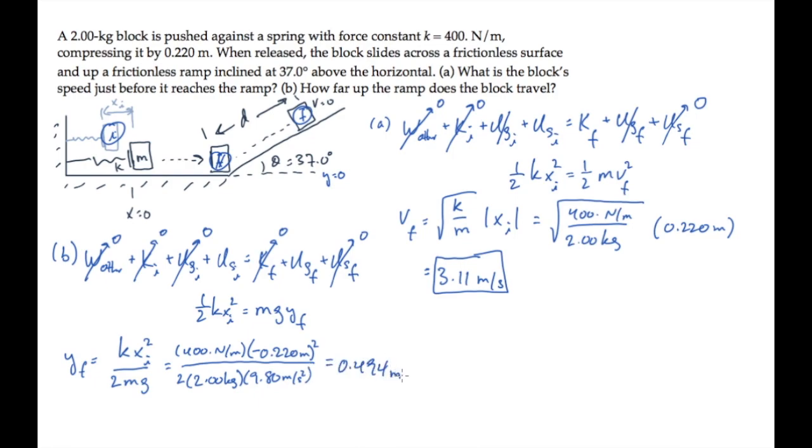We can relate that height to the distance that it slides along the ramp, because yf equals d sine of theta. d is the hypotenuse of that triangle. Solving for the distance d that the block slides along the ramp, it's the final height divided by sine of theta. Substituting the known values, we find that d equals 0.821 meters.